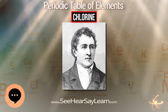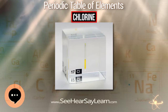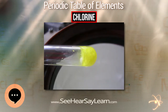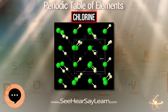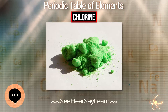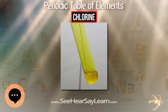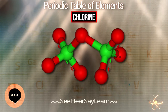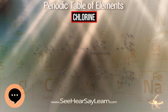Chlorine melts at −101.0°C and boils at −34.0°C. As a result of the increasing molecular weight of the halogens down the group, the density and heats of fusion and vaporization of chlorine are again intermediate between those of bromine and fluorine. The halogens darken in color as the group is descended; thus while fluorine is a pale yellow gas, chlorine is distinctly yellow-green. This color results from the electron transition between the highest occupied antibonding πg molecular orbital and the lowest vacant antibonding σu molecular orbital.